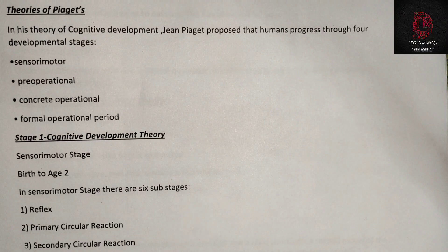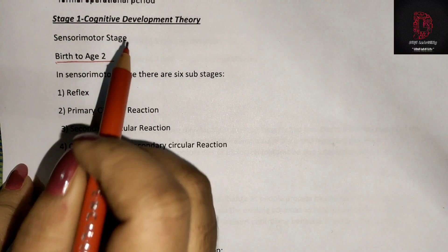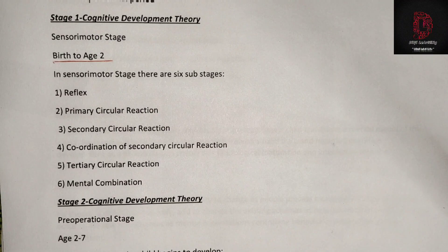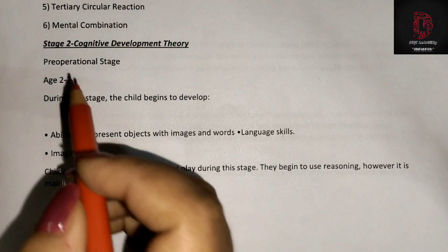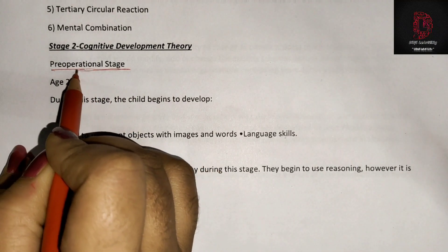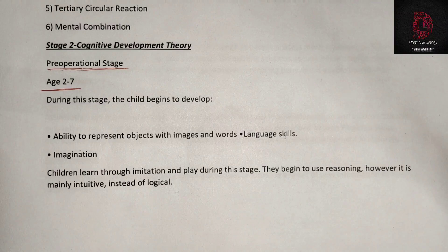Stage 1 — Sensorimotor Stage: from birth to age two. In the sensorimotor stage there are six sub-stages: reflex, primary circular reaction, secondary circular reaction, coordination of secondary circular reaction, tertiary circular reaction, and mental combination. Stage 2 — Pre-Operational Stage: ages 2 to 7. During this stage the child begins to develop the ability to represent objects with images and words. Language skills and imagination develop. Children learn through imitation and play. Reasoning begins but is mainly intuitive instead of logical.